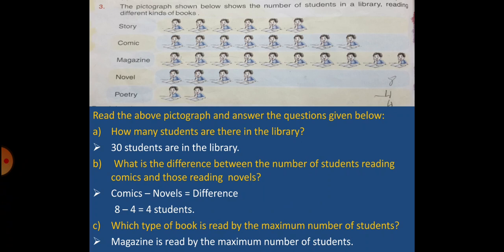B, what is the difference between the number of students reading comics and those reading novels? Difference means you have to subtract. The number of students reading comics is equal to 8 and the number of students reading novels is equal to 4. So 8 minus 4 is equal to 4 students. So the difference is 4 students.